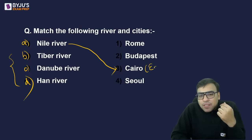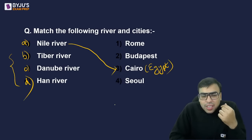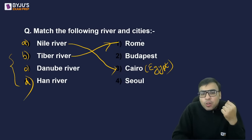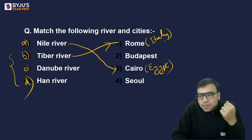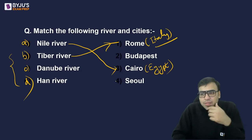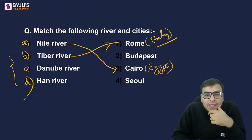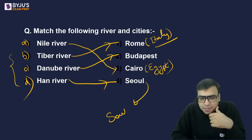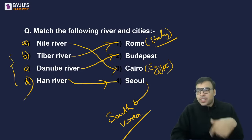Cairo is the capital of Egypt. The Tiber River passes through Rome, the capital of Italy — this is a previous year question. The Danube River flows through Budapest, the Hungarian capital, in Europe. The Han River is in Seoul, the capital of South Korea. The correct answer is 3-1-2-4.